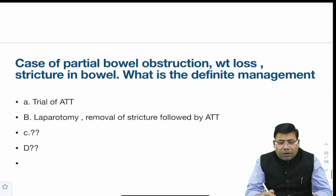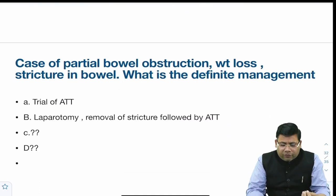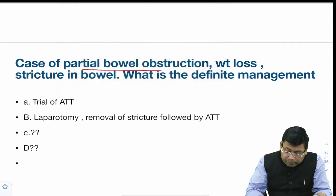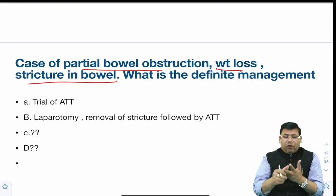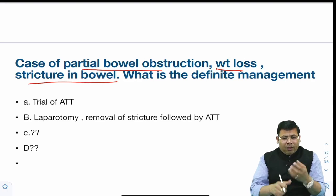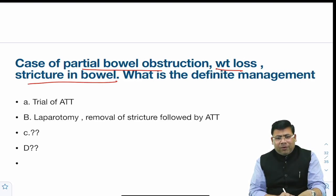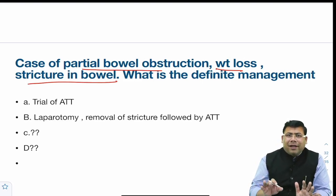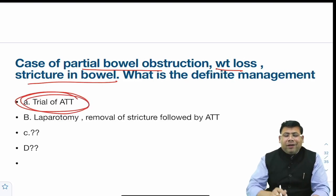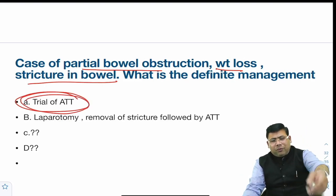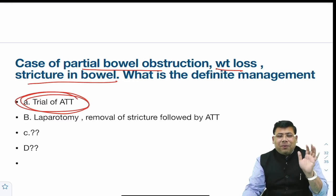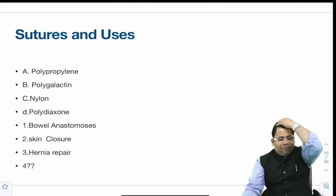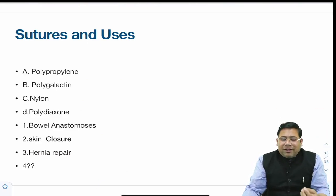A case of partial bowel obstruction — not complete — with weight loss and stricture in the bowel. This is a simple diagnosis: inflammatory bowel disease or intestinal tuberculosis in a country like India. The management is a trial of ATT first; only if it doesn't respond would one go for stricturoplasty or resection.